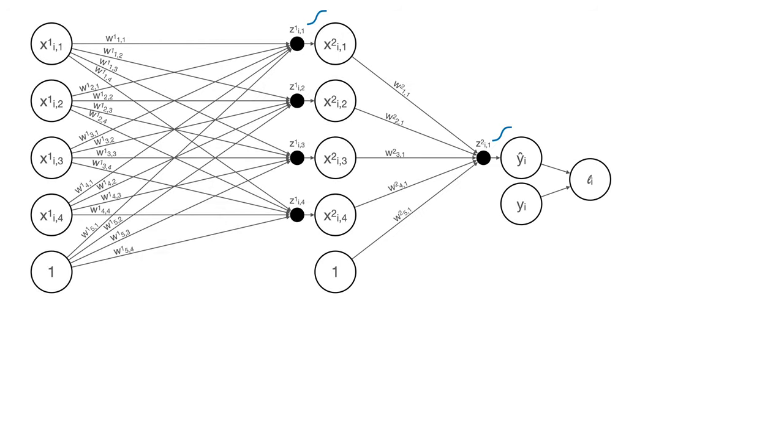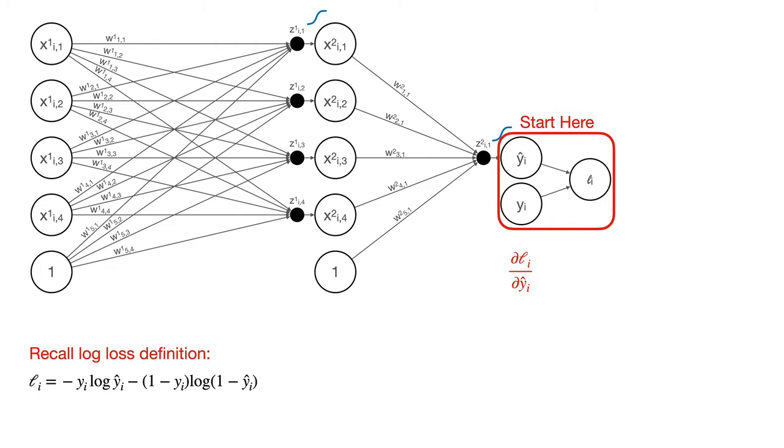So, we can shift our focus from capital L to lowercase l. That is, how does the log loss of an individual sample change with respect to small changes in the weights? It may seem a little bit daunting at first, but let's start at the end of our model and work our way backwards. The last thing our model spits out is a prediction. So, let's understand how a small change in a prediction affects log loss. That is, we want to find partial Li partial y hat i. Recall the definition of log loss on an individual sample i is this. So, with some high school calculus, we can determine partial Li partial y hat i to be y hat minus y divided by y hat times 1 minus y hat. Let's put that derivative in our pocket, so to speak. It'll be useful later.